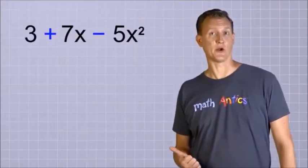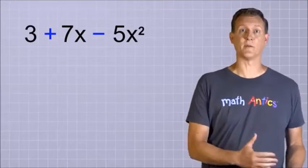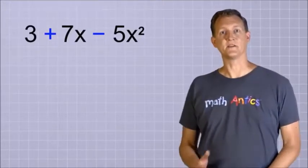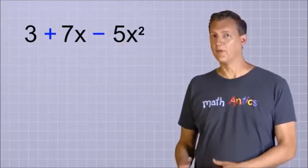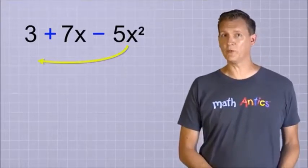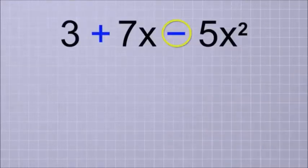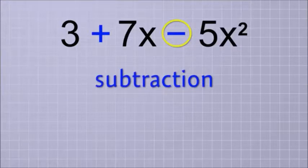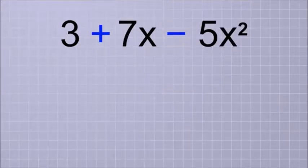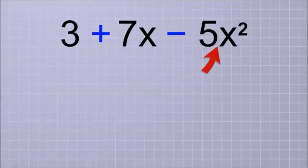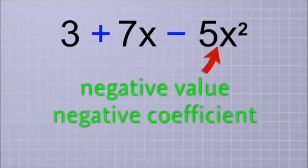And speaking of coefficients, what if we need to rearrange this polynomial so that its terms are in order from highest degree to lowest degree? The highest degree term is 5x squared. But before we just move it to the front of the polynomial, it's important to notice that it's got a minus sign in front of it. Normally, when we see a minus sign, we think of subtraction. But when it comes to polynomials, it's best to think of a minus sign as a negative sign that means that the term right after it has a negative value, or a negative coefficient.